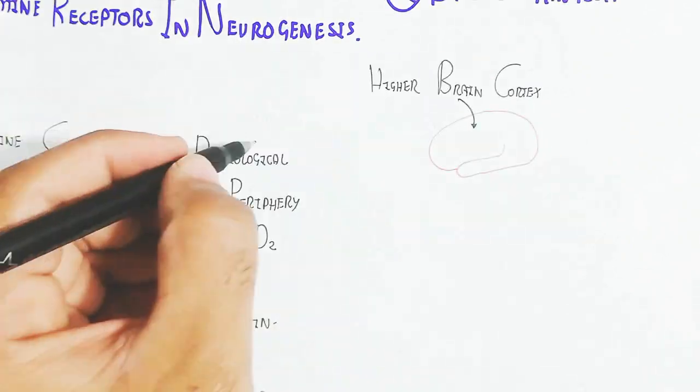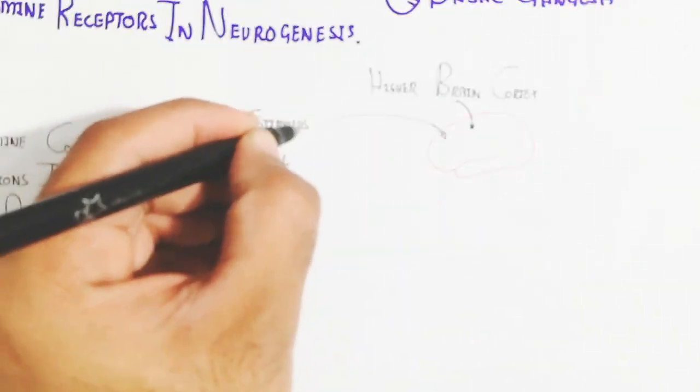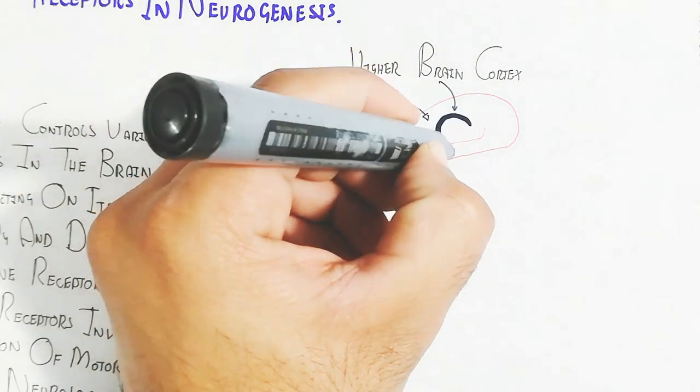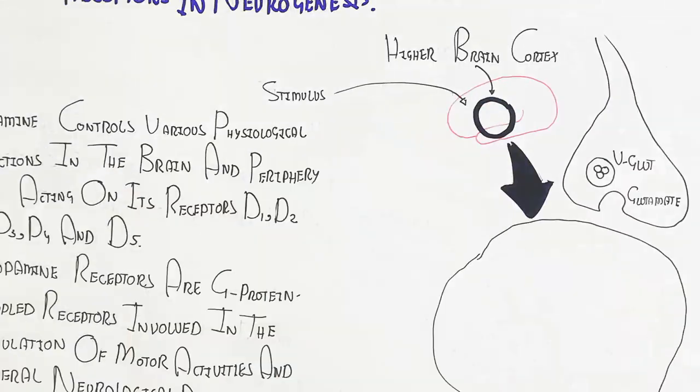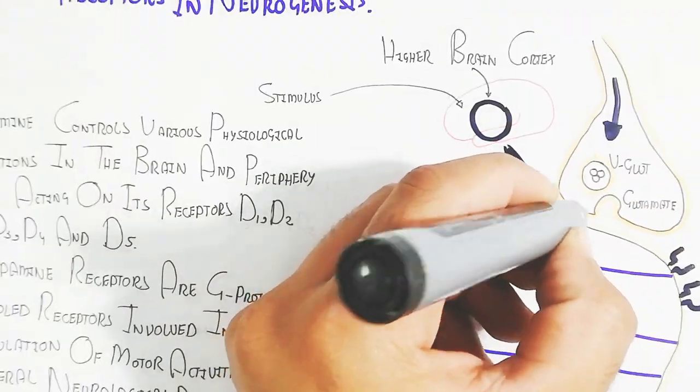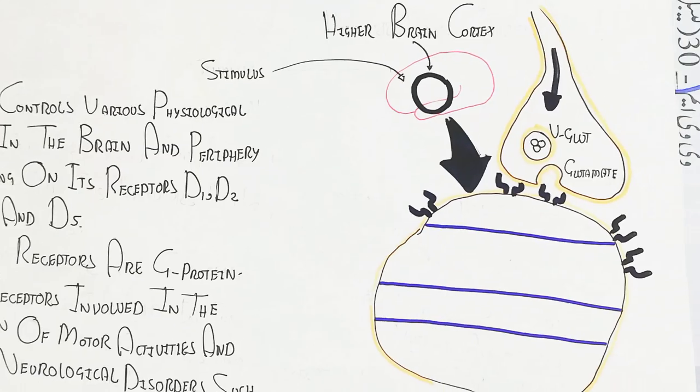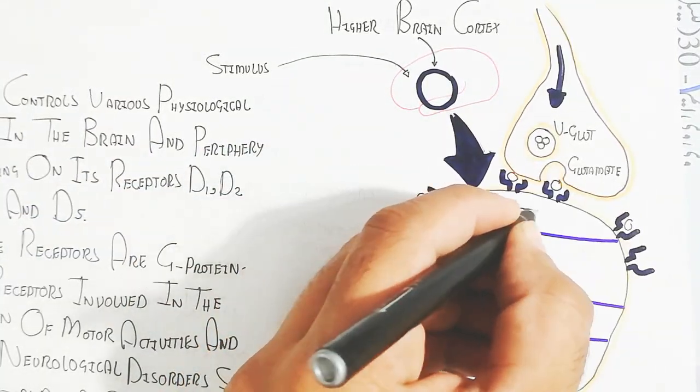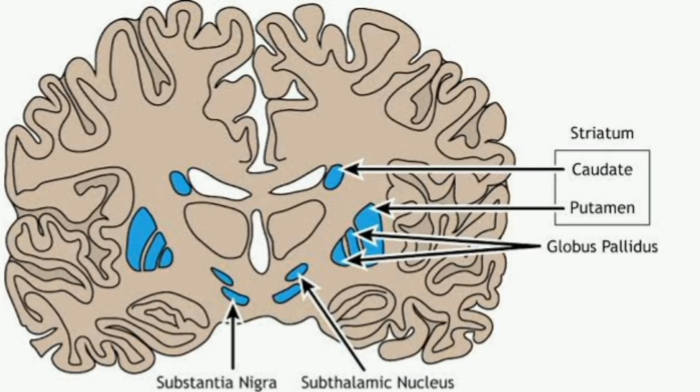Let's understand the input. Any environmental input will lead to the higher brain cortex receiving and transmitting to the striatum subcortical structure through glutamate. Glutamate will target the striatum, and here you can see the caudate and putamen nucleus and globus pallidus. Substantia nigra is also used.